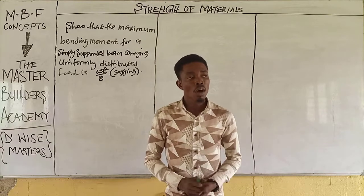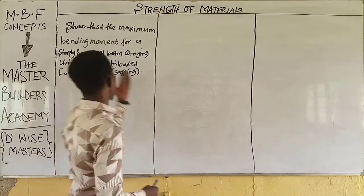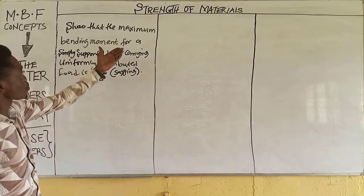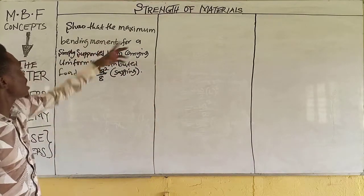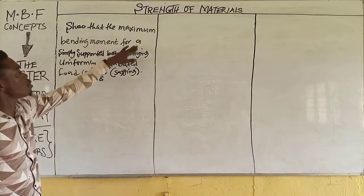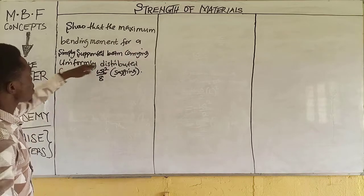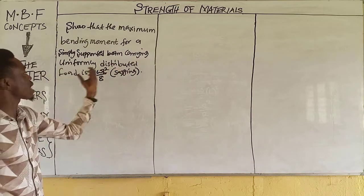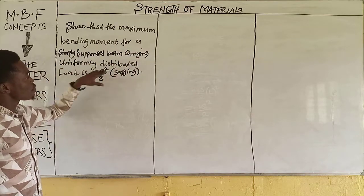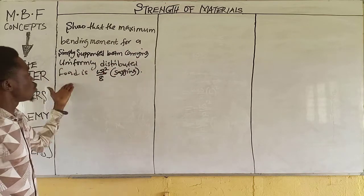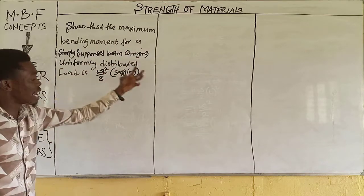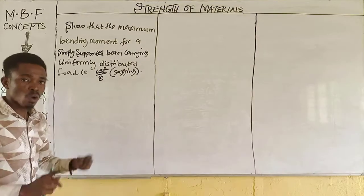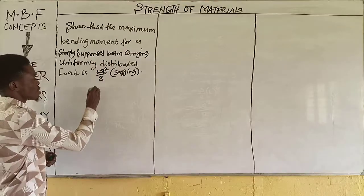Today on the board, we are asked to show that the maximum bending moment for a simply supported beam carrying a uniformly distributed load is WL squared over 8.